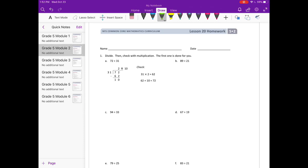89 divided by 21. I'm going to set it up. So we need to see how many times 21 can go into 8. Well, 21 can't go into 8, so I'll put a 0 there. How many times can 21 go into 89? I'm going to round 21 to 20, and 20 can go into 89 4 times.